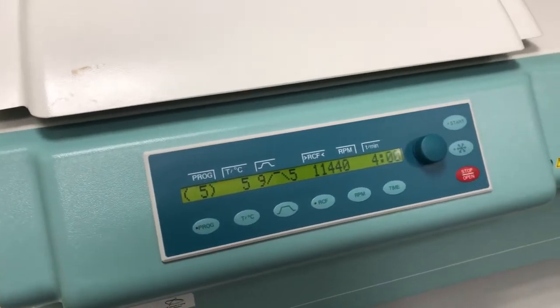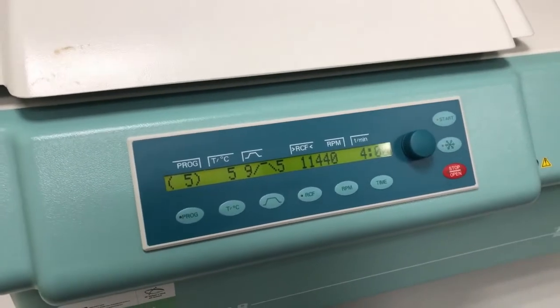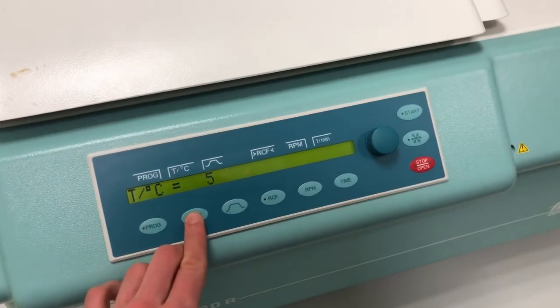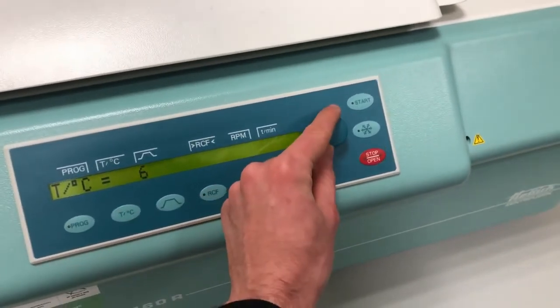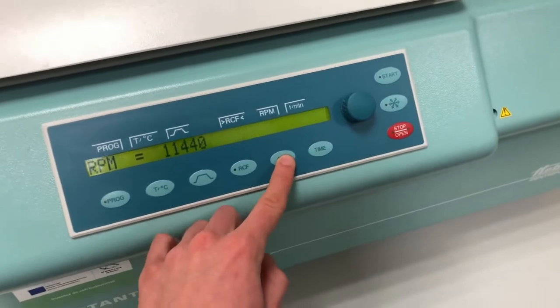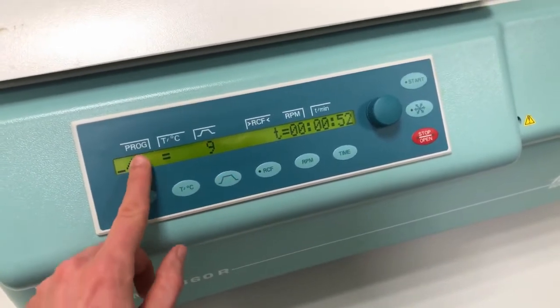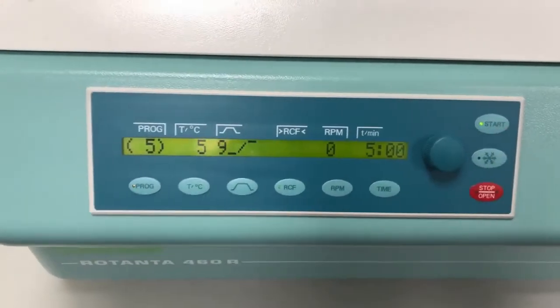And now you can see the menu. So as you can see, there are several important buttons and some not so important, like the program. Whoever uses this one. Now you can change the temperature, rotation, speed of acceleration, and most important, the start stop button.